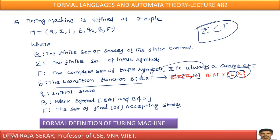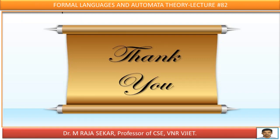Q naught is initial state and your B is blank symbol. Blank symbol belongs to tau, means tape symbol, and this blank symbol is not part of sigma. This blank symbol is not part of input symbols, isn't it? F means set of all final or accepting states. Thank you very much.